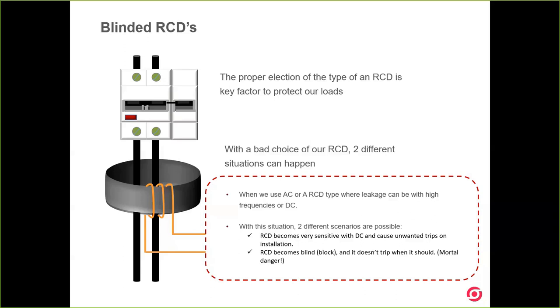The worst scenario is that the RCD becomes blind — it cannot see any kind of leakage, creating a very dangerous situation. It doesn't trip when it should. The RCD becomes blocked. In some cases, that can mean mortal danger, as you can imagine. So the election of the correct RCD type is very important.